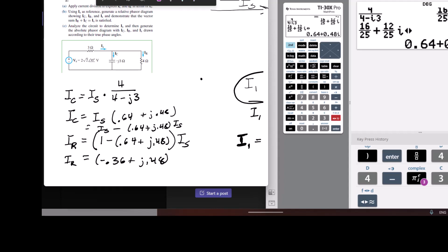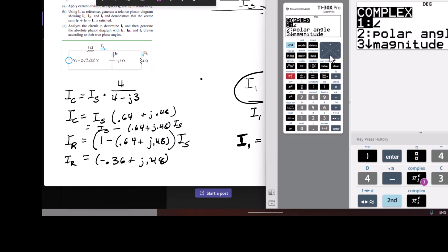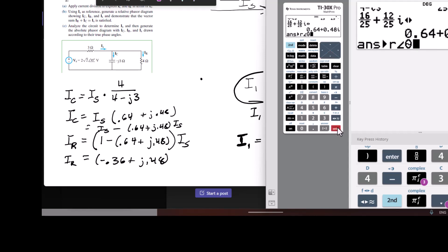Now, for the first part of this, it says to express it in terms of IS. I did that. And then it says, using IS as a reference, generate a relative phasor diagram. To do that, I need to get the angles for these, the phases for these, relative to IS. So I'm going to turn this to polar. So that's on the TI-36X, that's second and complex, and go down to number 4.